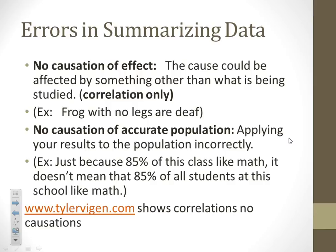Now here is another thing we need to be aware of when summarizing our data. One thing to think about is there's no causation — the cause could be affected by something other than what is being studied. Just because you see a correlation, just because when one thing increases something else increases, doesn't necessarily mean that it caused that increase. So you have to be careful when you summarize the data.